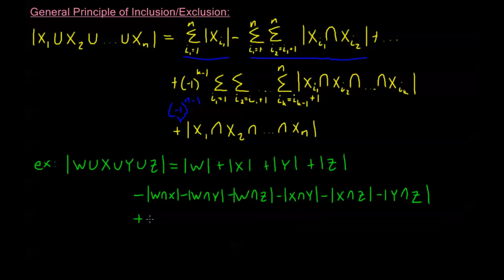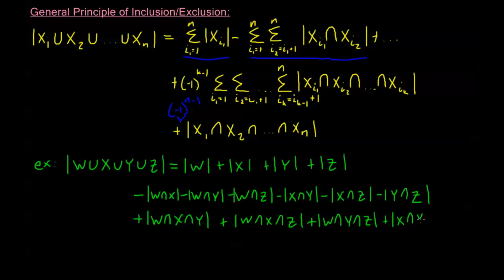Next, we add all possible intersections of three sets: plus W∩X∩Y, plus W∩X∩Z, plus W∩Y∩Z, and plus X∩Y∩Z. Finally, we alternate signs — plus, minus, plus, minus — so the last term is minus the intersection of all four sets: minus W∩X∩Y∩Z. Whatever value we compute on the right side equals the order of the union of all four sets.